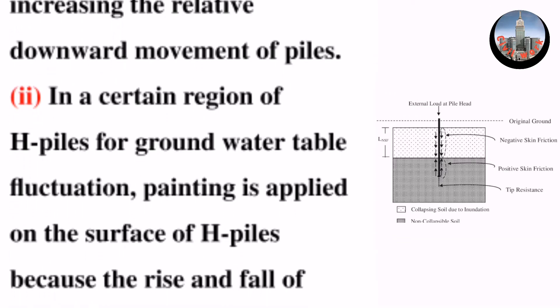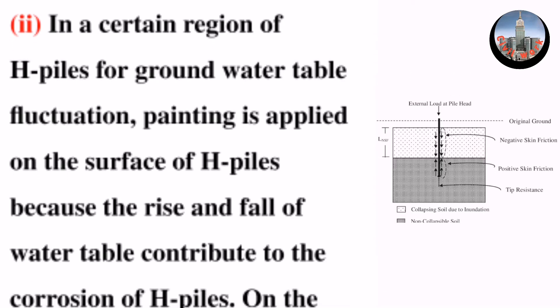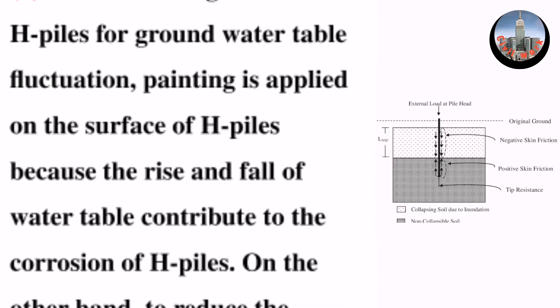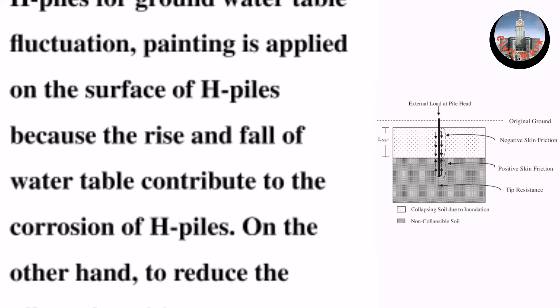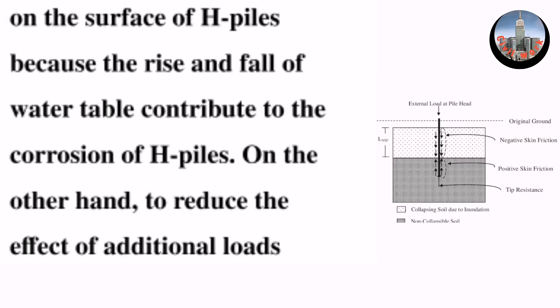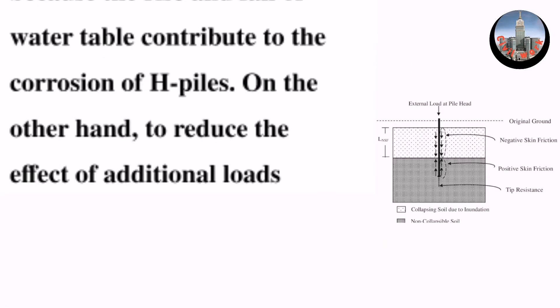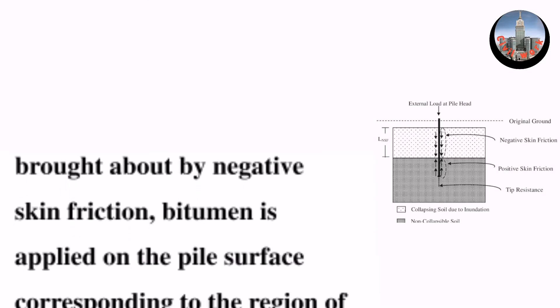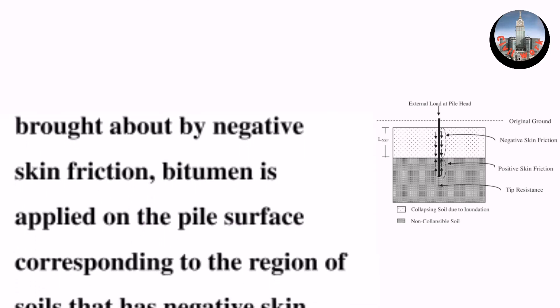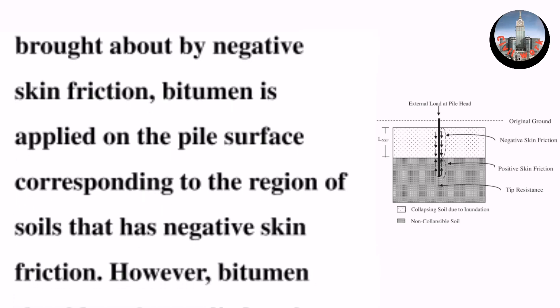Method two: In a certain region of H-piles for groundwater table fluctuation, painting is applied on the surface of H-piles because the rise and fall of water table contributes to the corrosion of H-piles. On the other hand, to reduce the effect of additional loads brought about by negative skin friction, bitumen is applied on the pile surface corresponding to the region of soils that has negative skin friction.